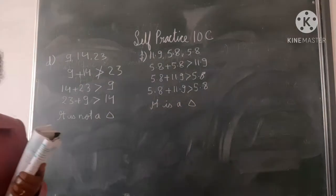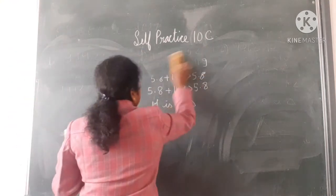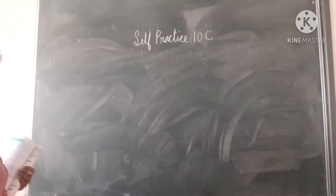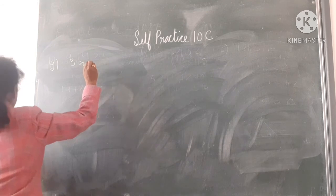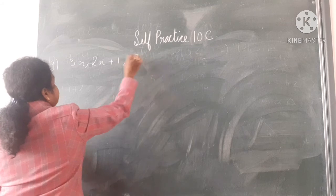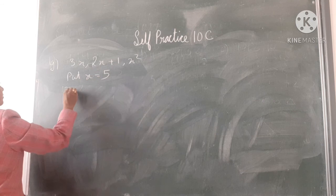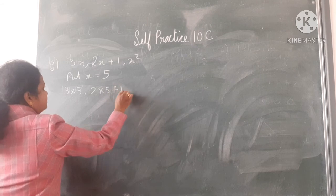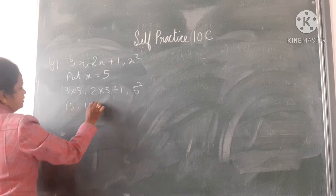Now see the G part: 3x, 2x plus 1, and x squared. Put x is equal to 5. 3 into 5, 2 into 5 plus 1, then 5 squared. 15, 11, 25.